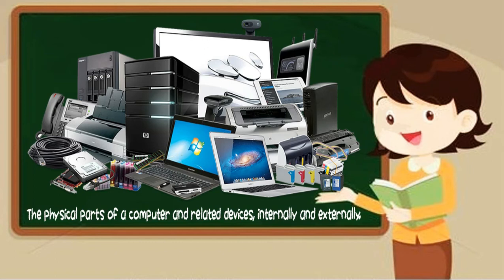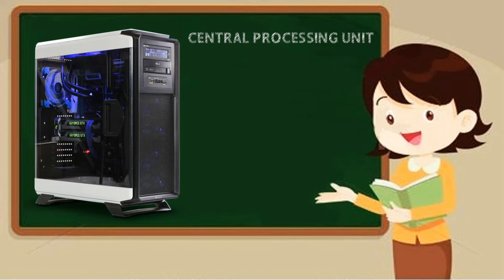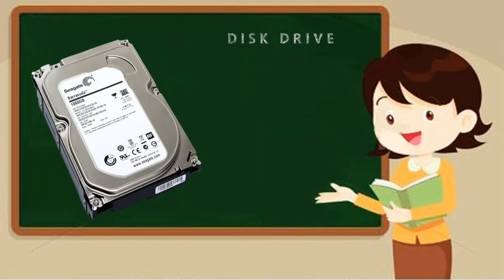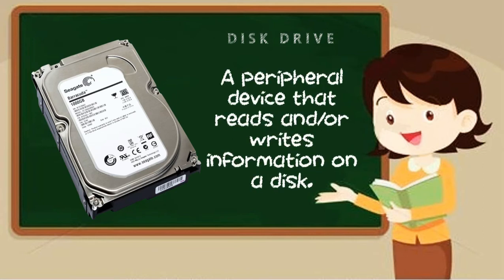Now we go to the different examples of computer hardware. We have the central processing unit. This is the brain of the computer and it controls the other elements of the computer. We have disk drive — a peripheral device that reads and/or writes information on a disk. When we say peripheral, it enters information or instruction.